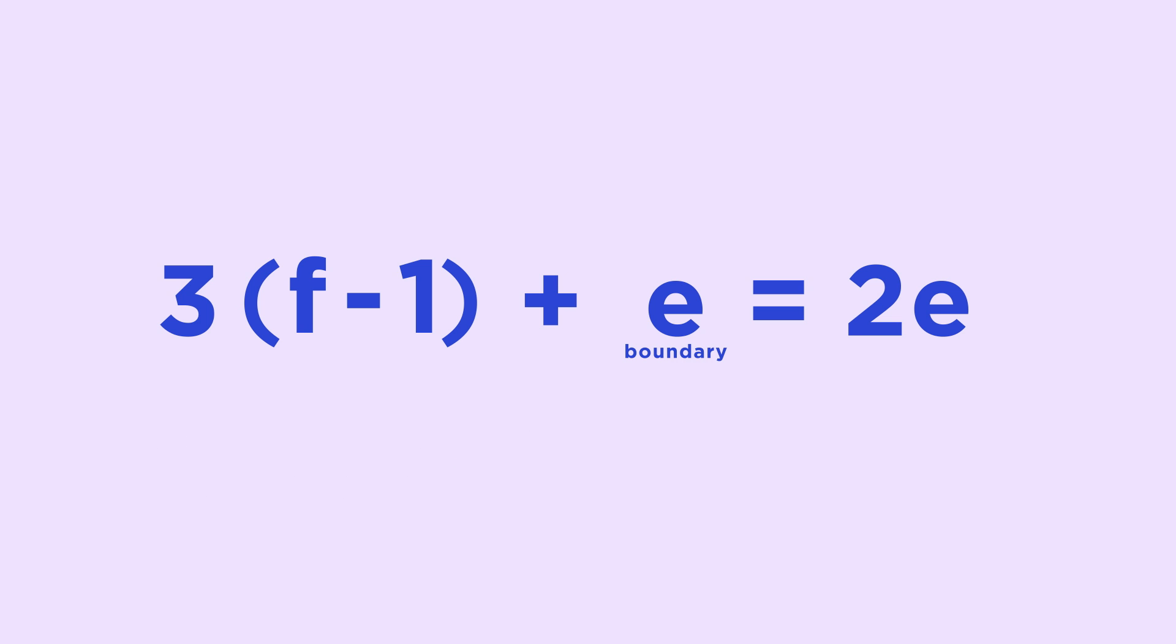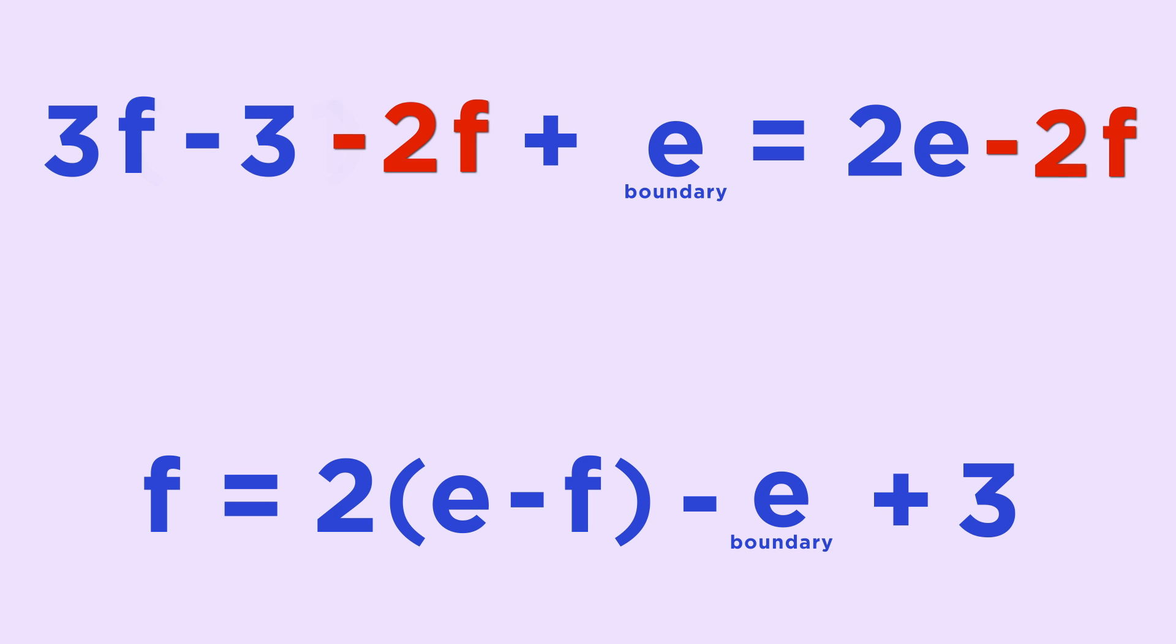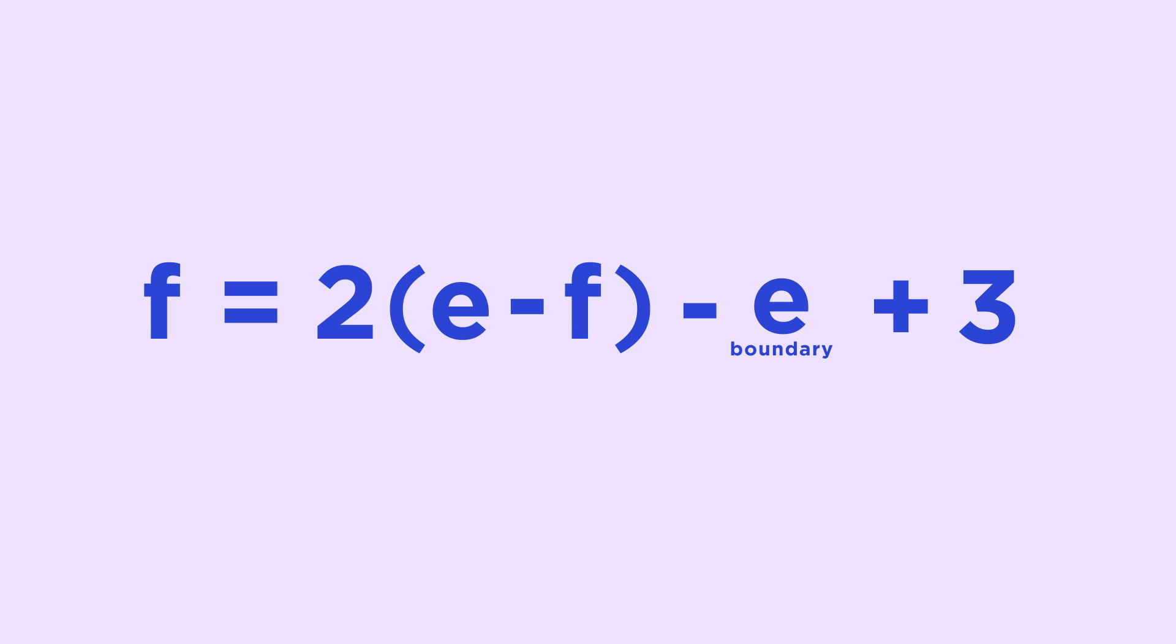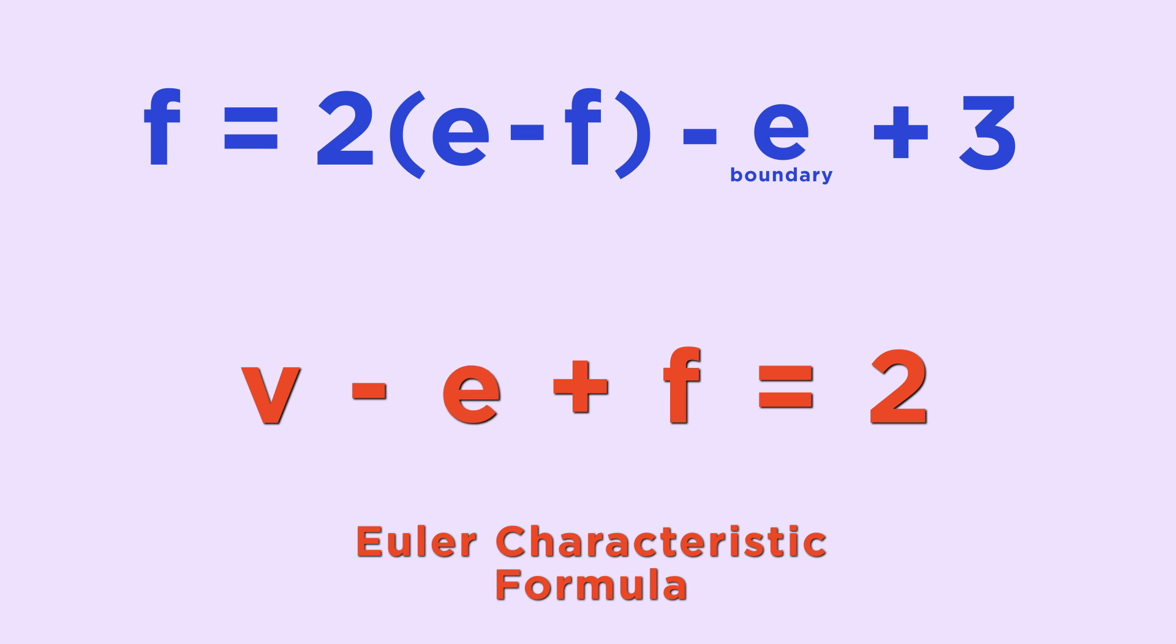Now, let's do some algebra to rearrange it like this. We subtract 2f from each side, move the number of boundary edges and the 3 over, and factor the 2 out. We like this formulation because it allows us to apply the formula for the Euler characteristic. E minus f is equal to v minus 2, giving us this.